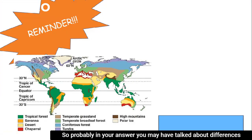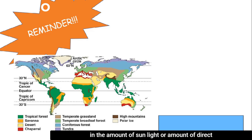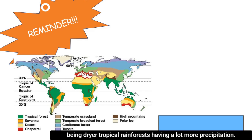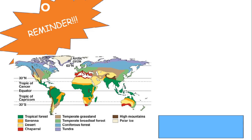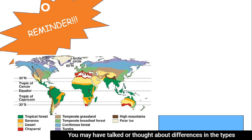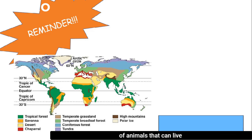In your answer, you may have talked about differences in the amount of direct sunlight, maybe differences in precipitation levels — deserts being drier, tropical rainforests having a lot more precipitation. You may have also thought about differences in the types of animals that can live in or can't live in certain biomes.